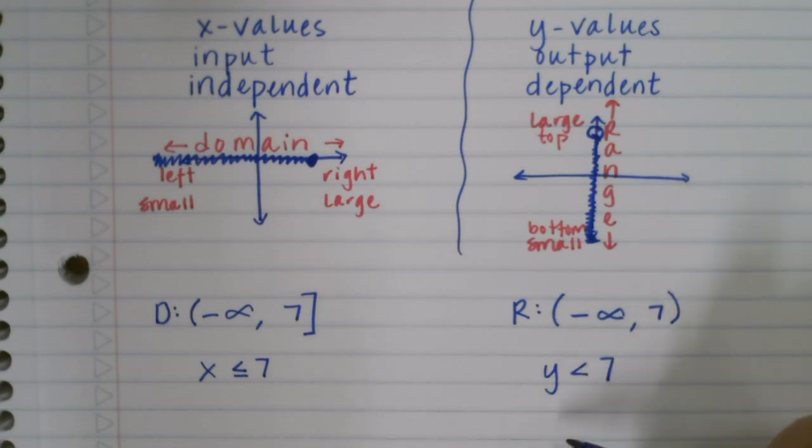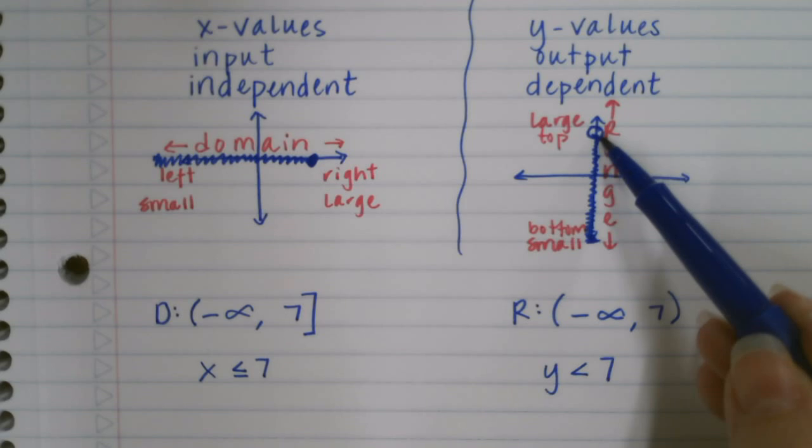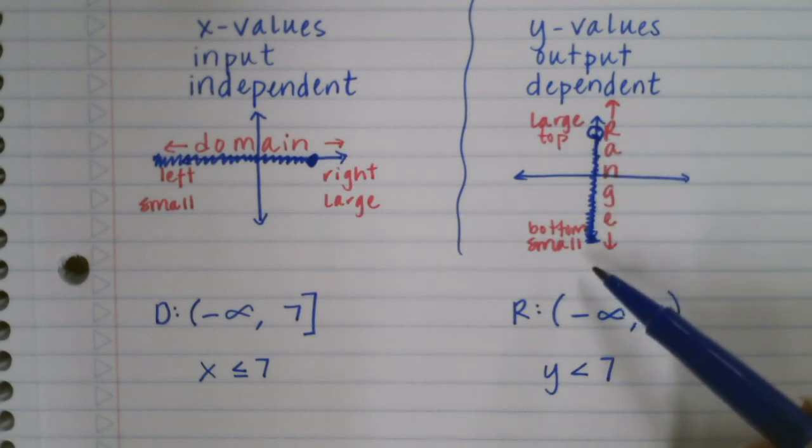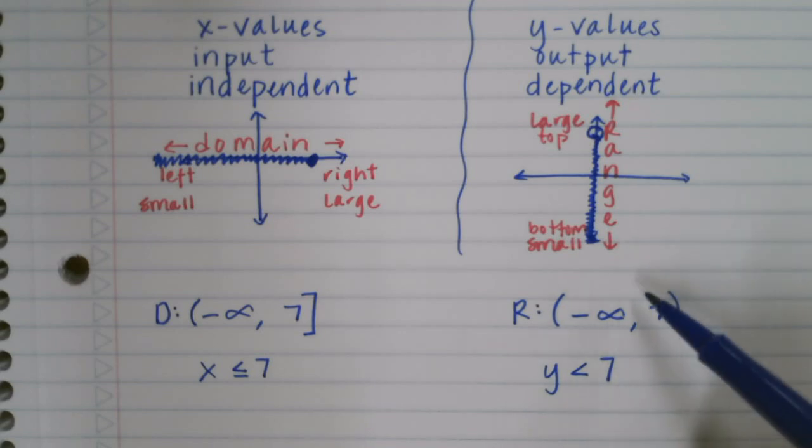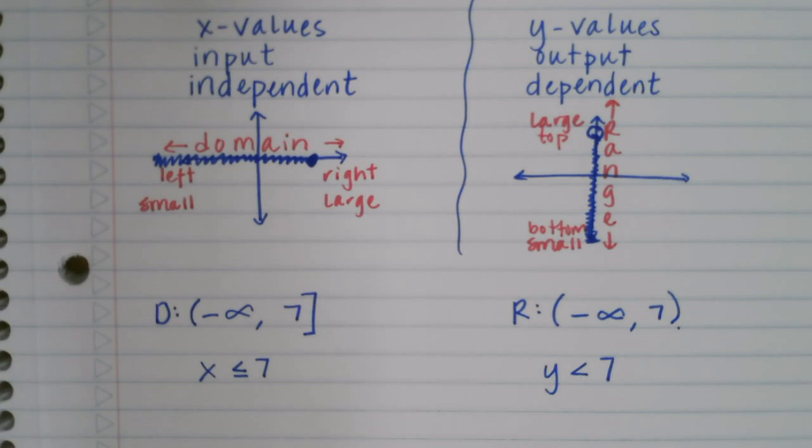But this one over here, we would say that y is less than 7. Because we're doing the range, we're talking about the y, but also it's going to be 7 not included but everything less than. So less than 7 is what we use for the parentheses, which is also what we use for the open dot.